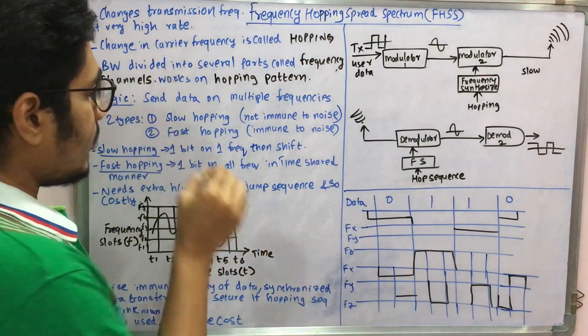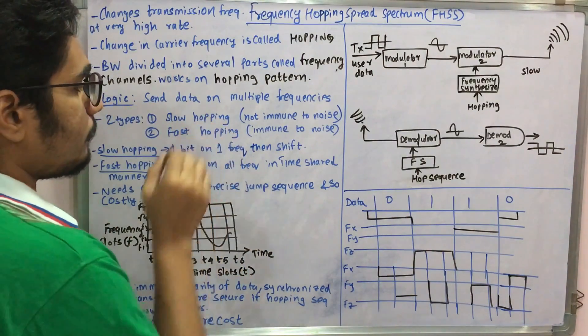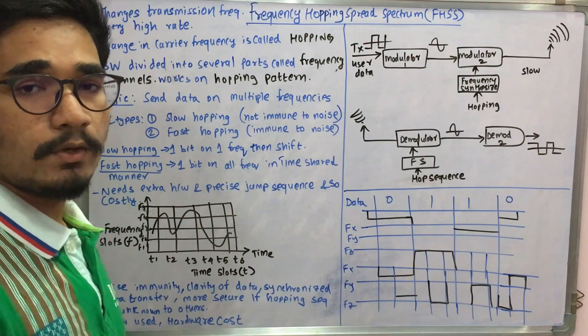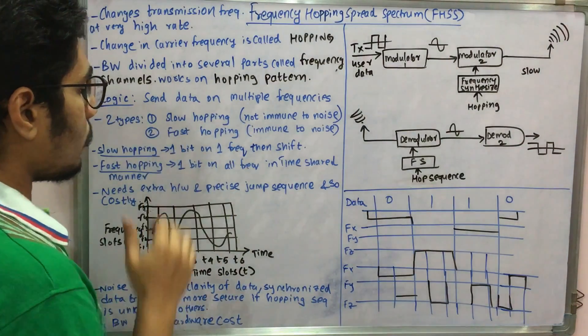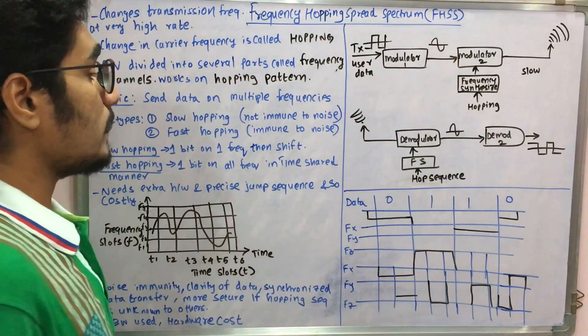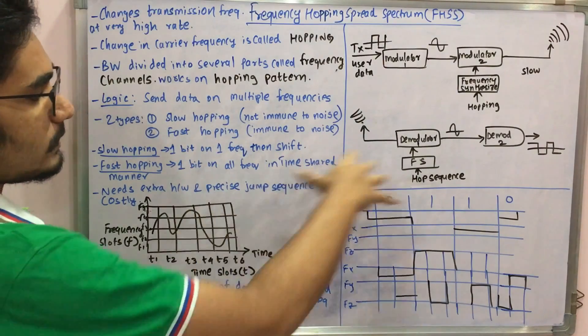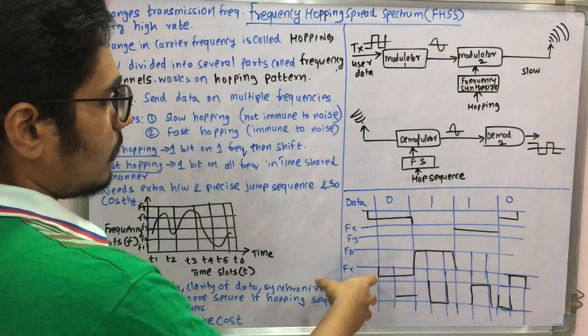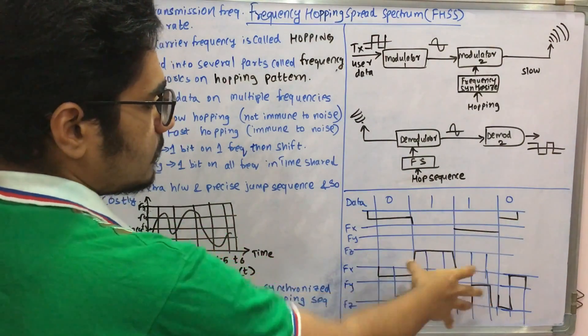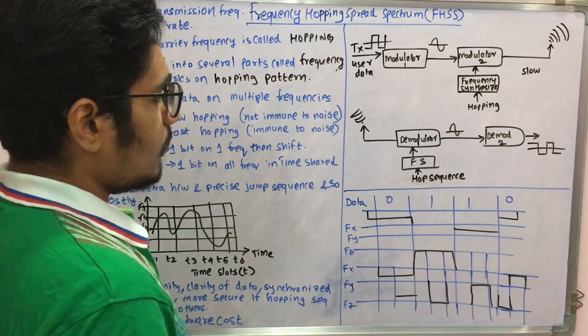In slow hopping, the technique is one bit is kept on one frequency and then shifted at regular intervals. Whereas in fast hopping we have one bit on all frequencies in a time-shared manner. So you can see here, this is slow hopping and this is fast hopping.